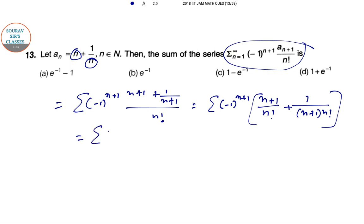So simply summation of minus 1 whole to the power n plus 1, this is 1 by n minus 1 factorial, this is 1 by n factorial and this is 1 by n plus 1 into n factorial.